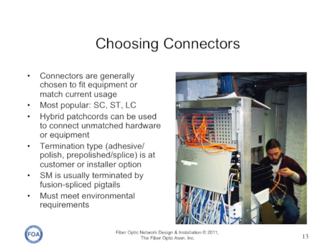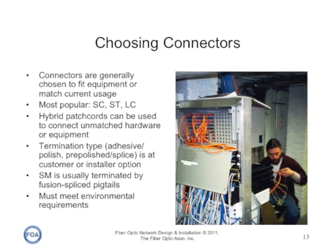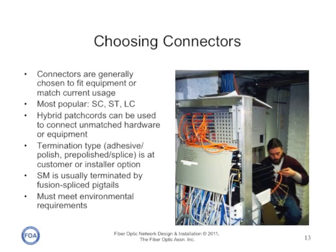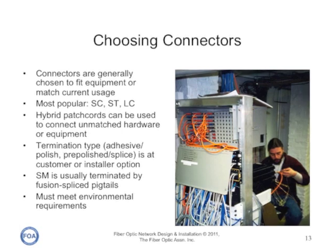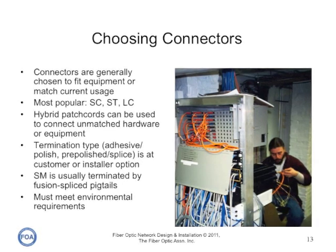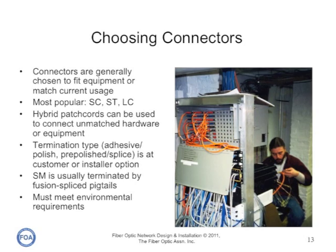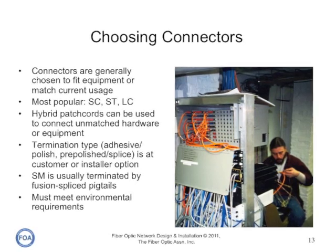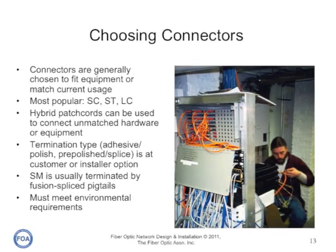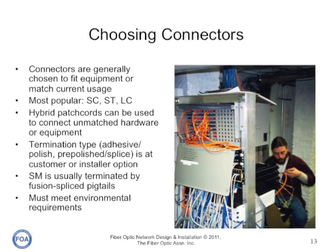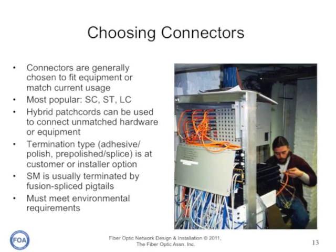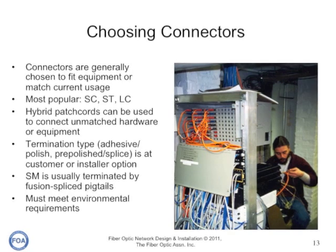Connectors are generally chosen to fit the communications equipment you're connecting to, or to match the connectors in the current cables already installed in a building. At the current time, the most popular connectors are STs, SCs, and LCs. If you have a cable plant with different connectors than the equipment you're using, you can use hybrid patch cords — for example, an LC connector on one end to connect to a gigabit switch, and an SC connector on the other end to connect to the current cable plant. The termination type — adhesive polish or pre-polished splice — is at the customer's option, and single mode, as in outside plant, is usually terminated by fusion splice pigtails.